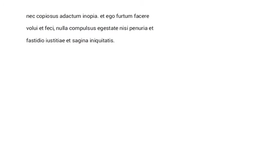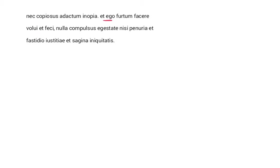And he says: I — ego — furtum facere volui et feci. I, a theft to commit, both desired and I did it. But the word order here, by juxtaposing ego and furtum, the identity of Augustine and the act of theft, highlights his state of mind and his guilt. Now, volui and feci are both first person singular, perfect, indicative, active verbs — I wanted it and I committed it.